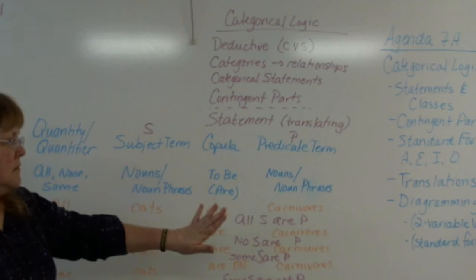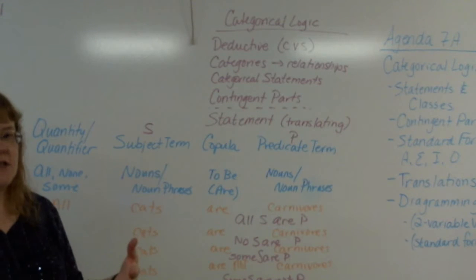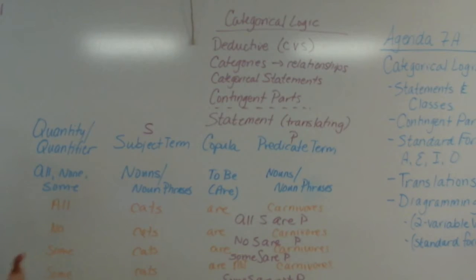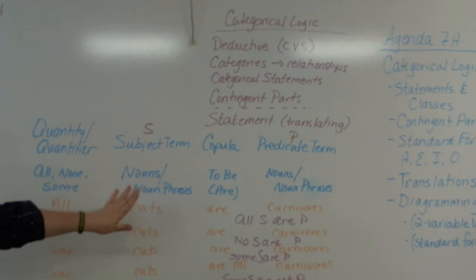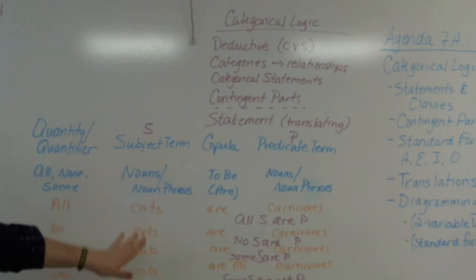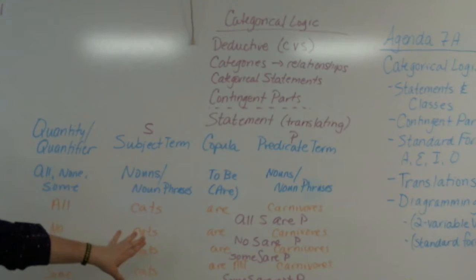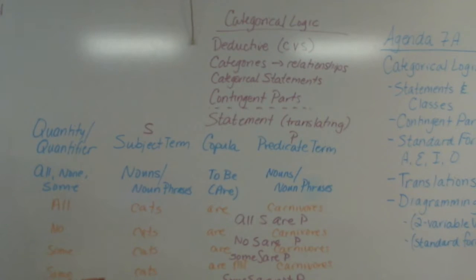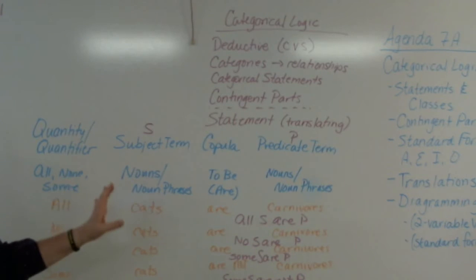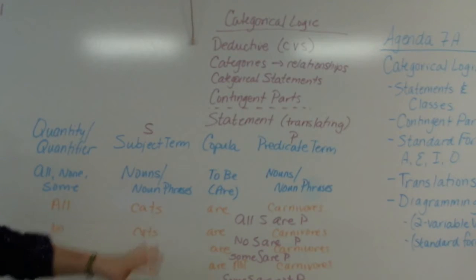So our four standard form translations are: all S are P, no S are P, some S are P, and some S are not P. These are our standard forms that any categorical statement can be put into. Remember modus ponens and the P's and Q's? Same idea, slightly different format.